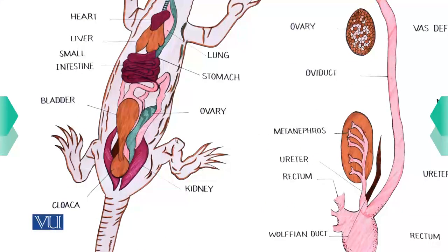In lizards, the kidneys are found on both sides of the vertebral column. The vertebral column is found in the center, and the kidneys are located on both sides of it.